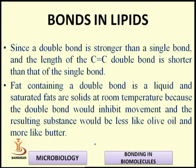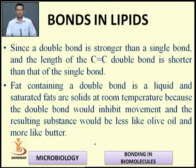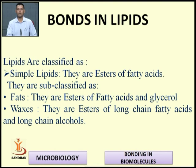Since a double bond is stronger than a single bond and the length of a carbon-carbon double bond is shorter than that of a single bond, fats containing double bonds are liquid, while saturated fats are solid at room temperature. The double bonds inhibit movement, making the substance less like olive oil and more like butter. Lipids are classified as simple lipids and compound lipids. Simple lipids are esters of fatty acids, subclassified as fats and waxes. Fats are esters of fatty acids and glycerol; waxes are esters of long-chain fatty acids and long-chain alcohols.